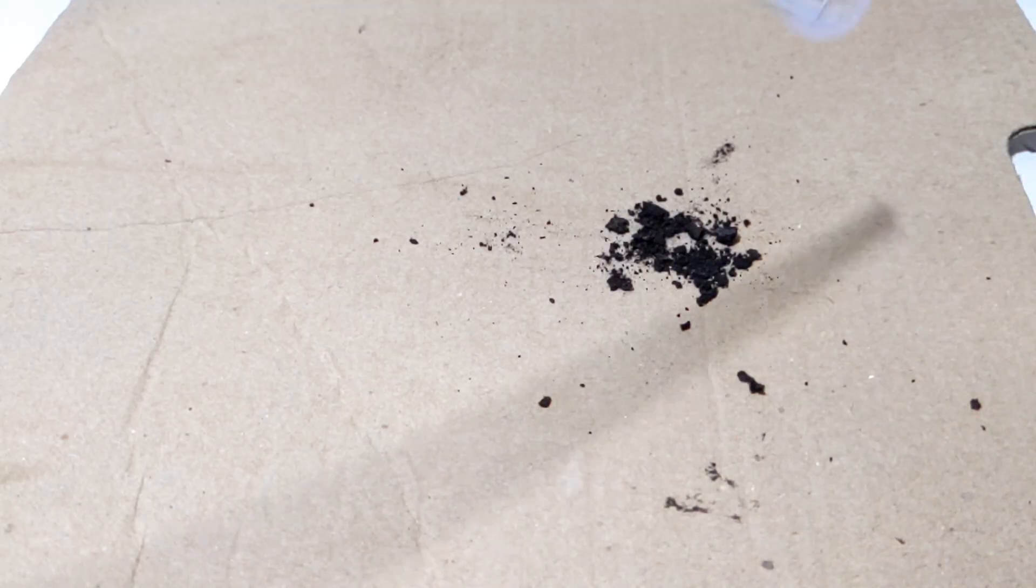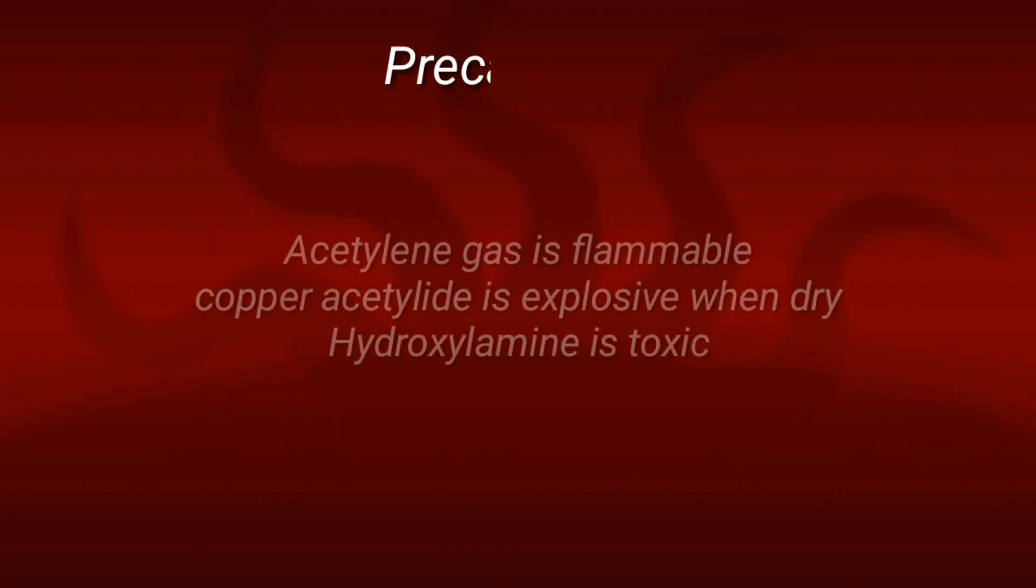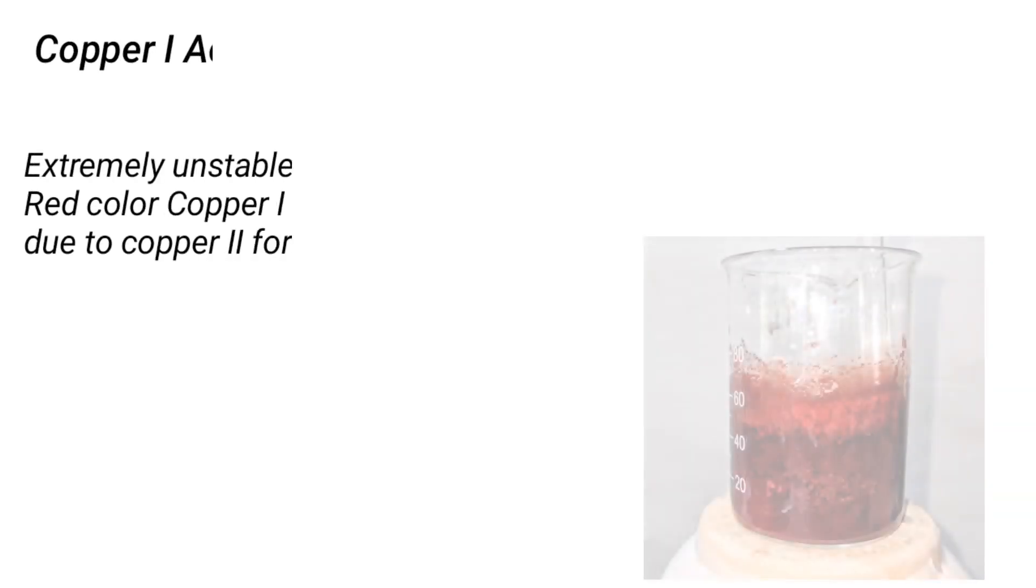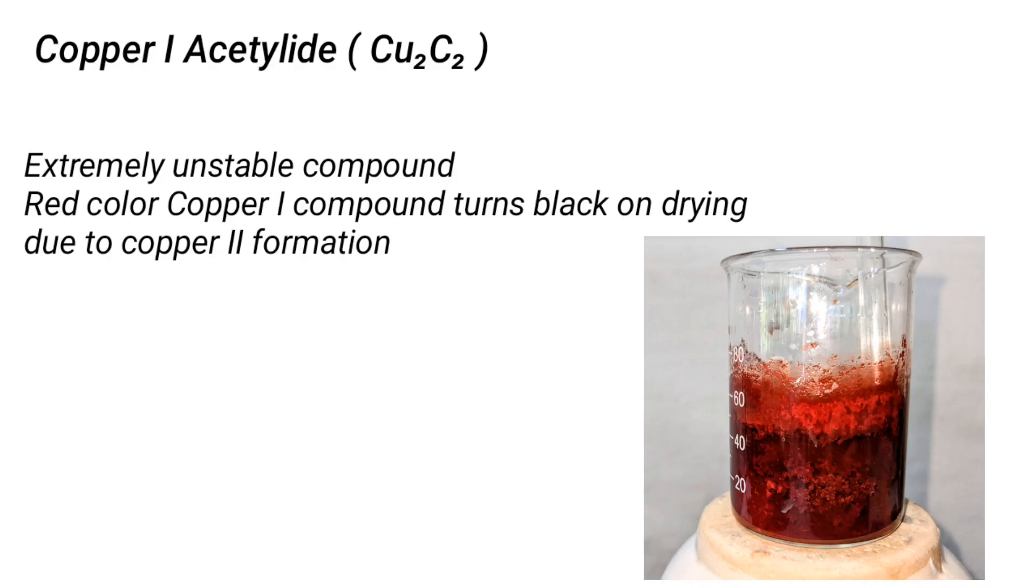In this video we will be making an extremely unstable compound using acetylene: copper acetylide. The copper acetylide we aim to prepare is copper 1 acetylide which has a red color, but on drying it turns black due to oxidation.